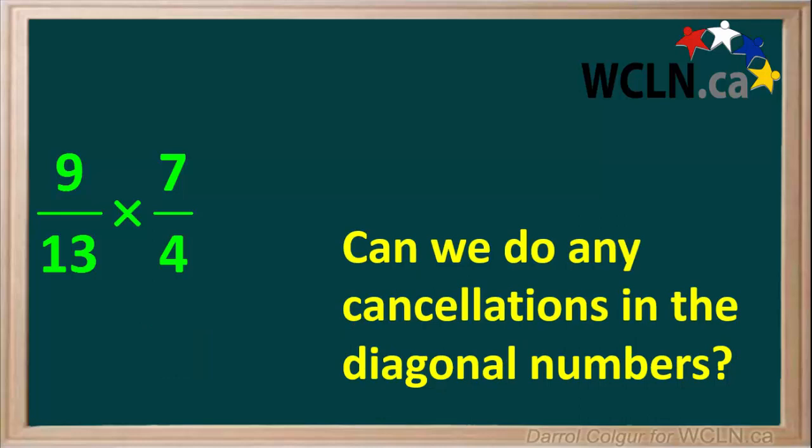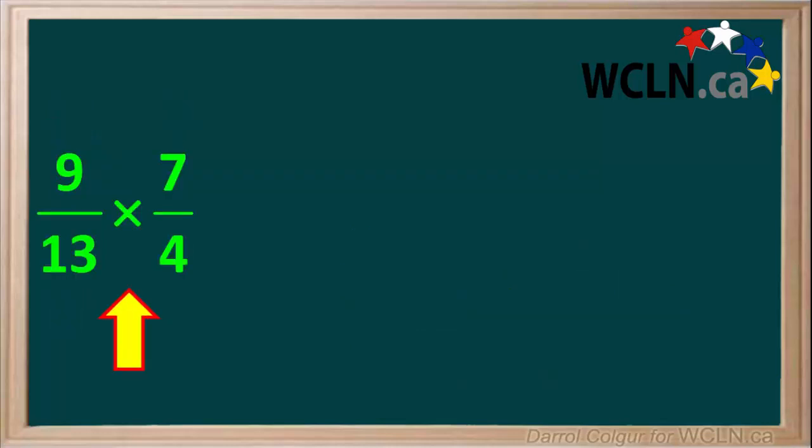We also check the diagonals and see if we can do any cancelling to simplify them. There is nothing we can cancel between 9 and 4, or between 7 and 13. So we can multiply these two fractions as they are.